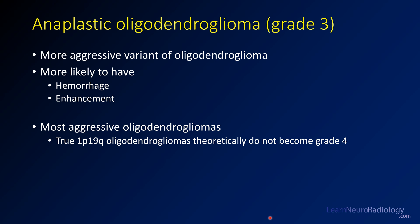This is an anaplastic oligodendroglioma, the more aggressive variant of oligodendroglioma. They are more likely to have hemorrhage and enhancement, both of which we saw in this case. These are theoretically the most aggressive oligodendrogliomas. When patients truly have 1p19q codeletion, they theoretically never become GBMs. If progression to a GBM does occur, something unusual is going on — such as a lower-grade precursor splitting into two clonal populations — but that is very rare.